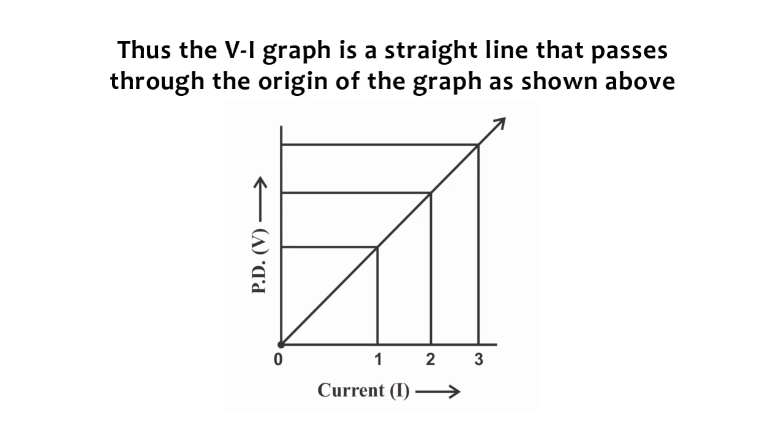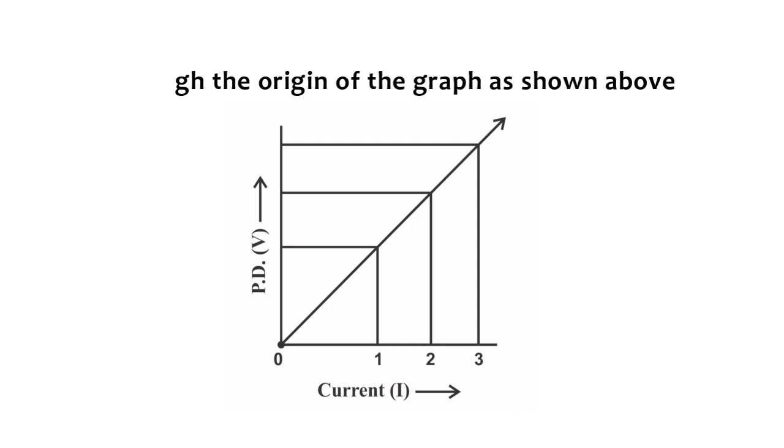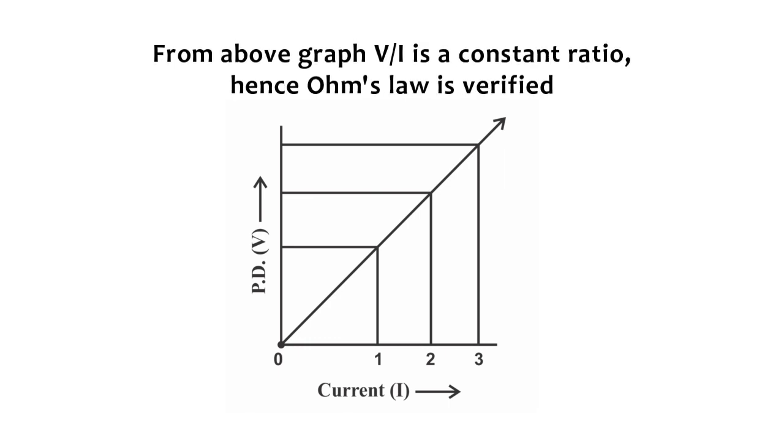Thus the V-I graph is a straight line that passes through the origin of the graph as shown above. From the above graph, V by I is a constant ratio, hence Ohm's law is verified.